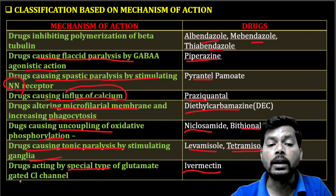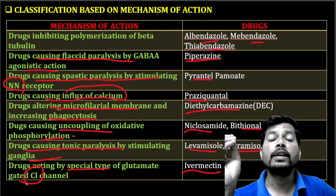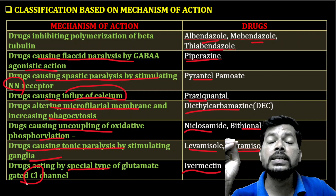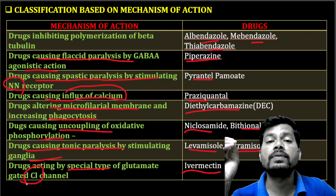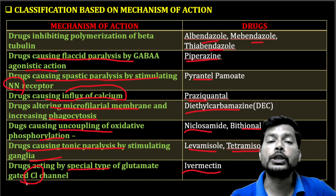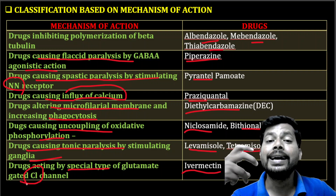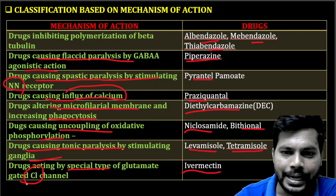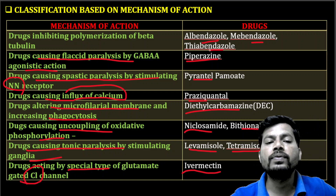From the antibiotic class, naturally derived from Streptomyces avermitilis, is ivermectin. This acts on a special type of glutamate-gated chloride channel, increasing the influx of Cl⁻ into the helminth. Increased Cl⁻ causes hyperpolarization, which is the resting condition, leading to relaxation of the muscles of the helminth.